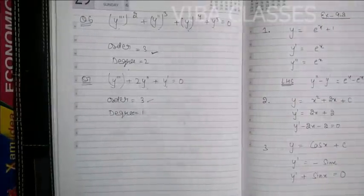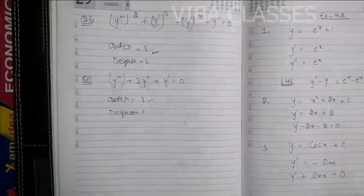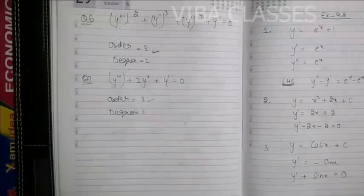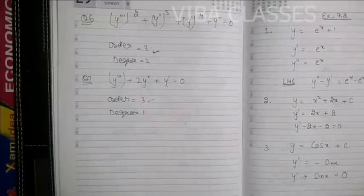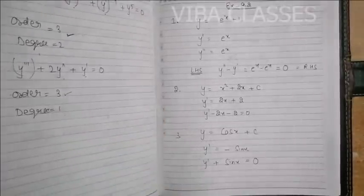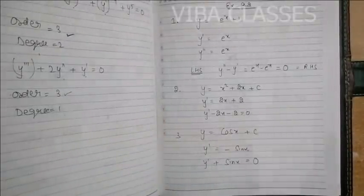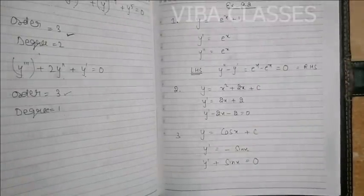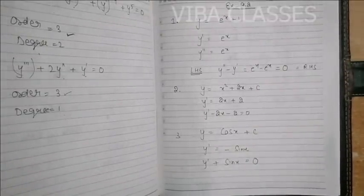I hope it is clear. This is your first exercise, 9.1. I hope the degree and order of differential equations are clear to you. Now the next exercise, 9.2. In 9.2, it shows you how to form a differential equation. You have a question given — how do we create the differential equation? You have already been given the function and you have to check that the differential equation is satisfied or not.